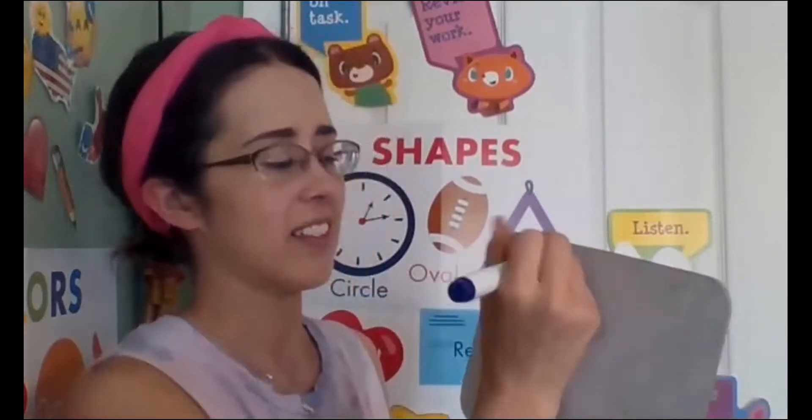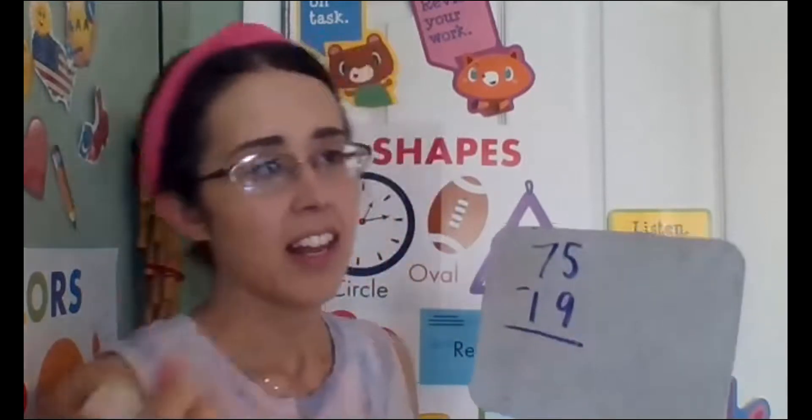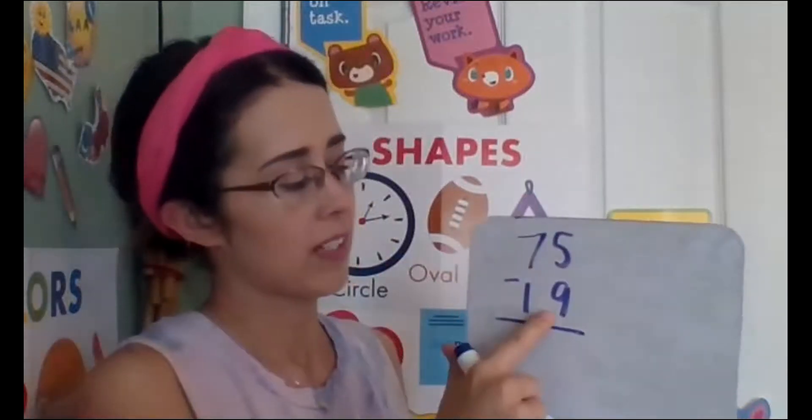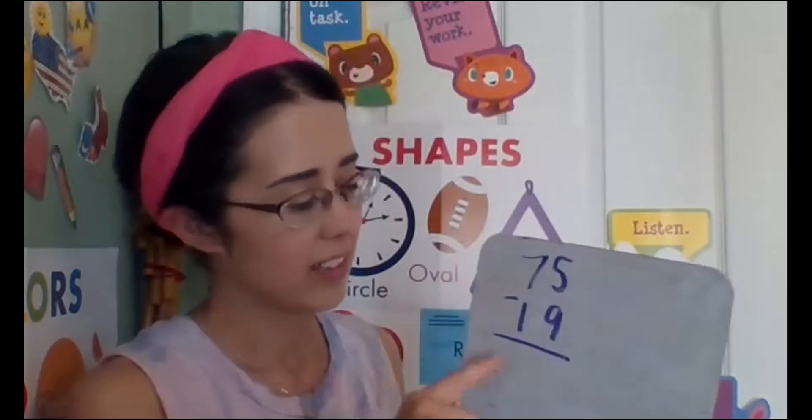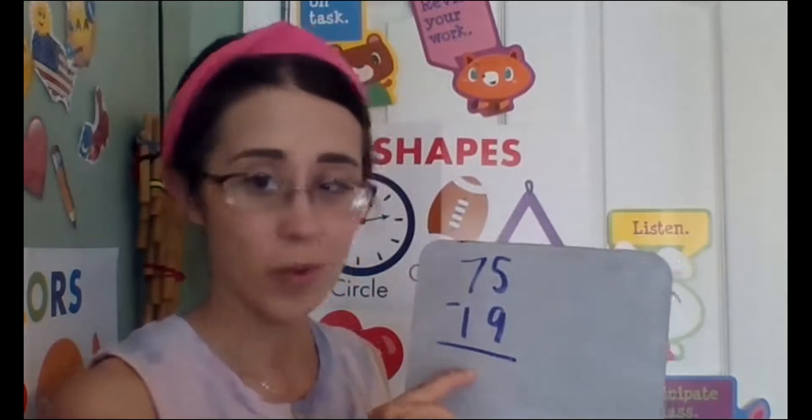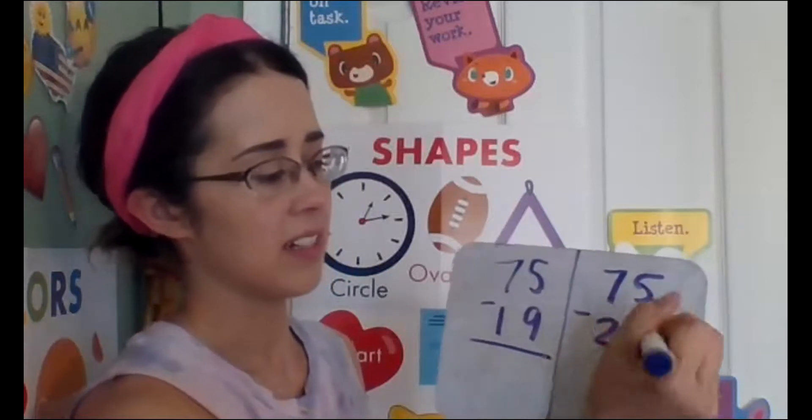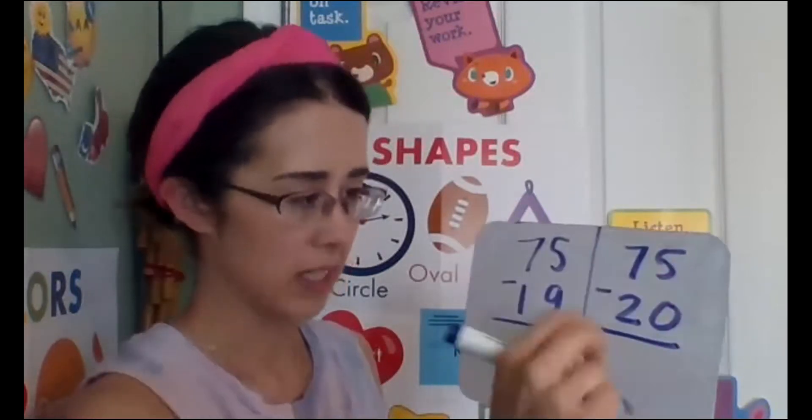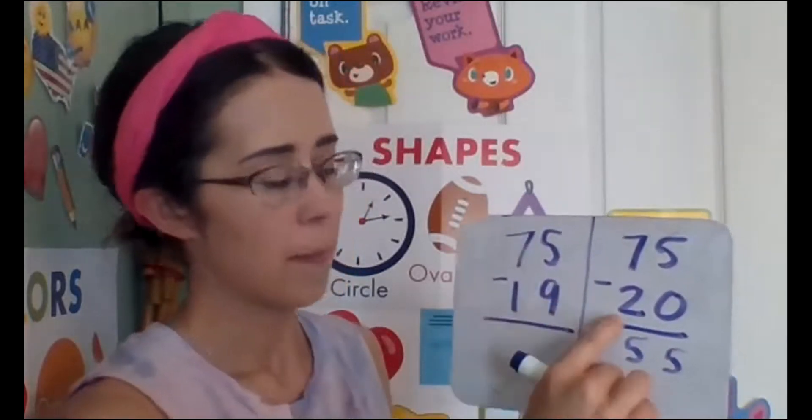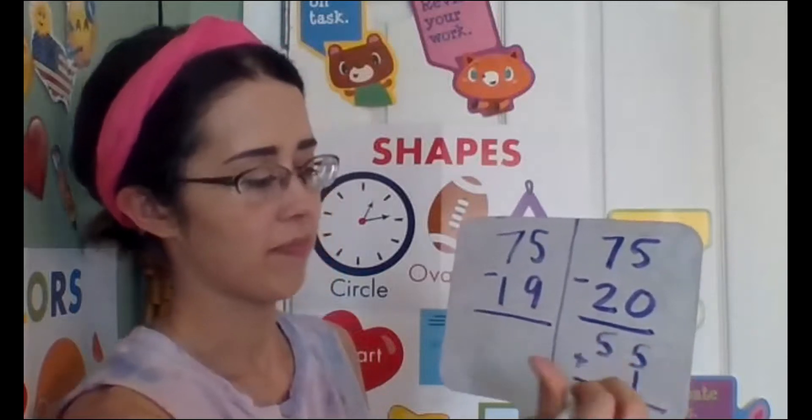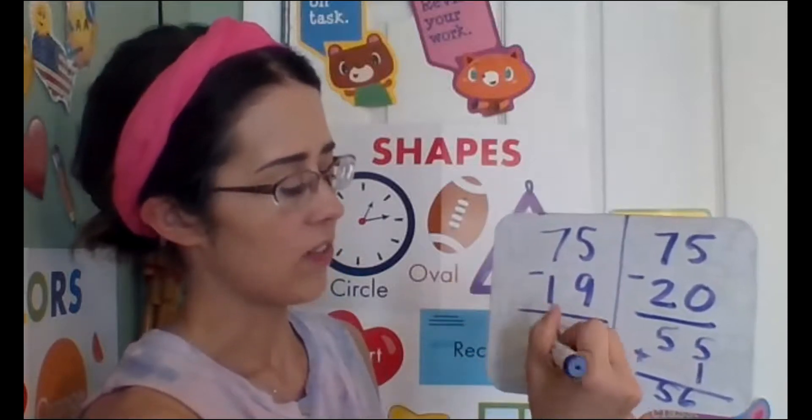Just to be sure we got this, let's try 75 minus 19. My trick: make it a 10, add one. If I'm going to make 19 a 10, 19 is closest to 20. So when we say make it a 10, it means 19 becomes 20, and we subtract. Easy peasy, 55. Make it a 10, add one. My final answer would be 56. 75 take away 19 is 56.